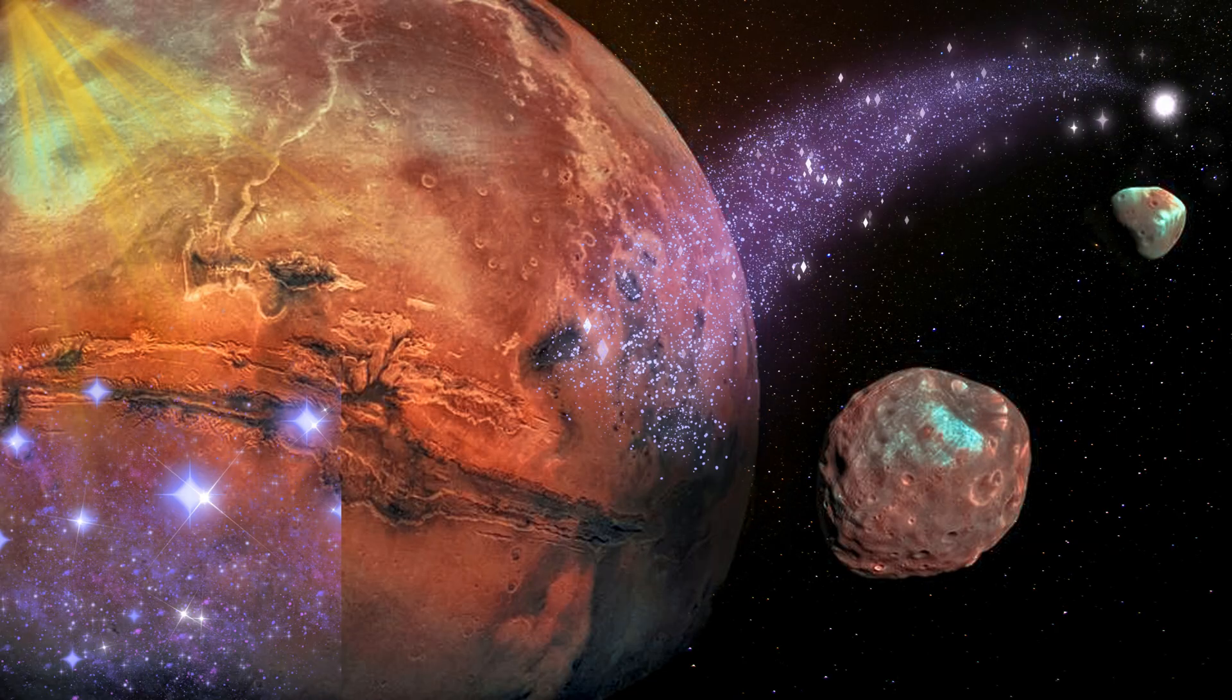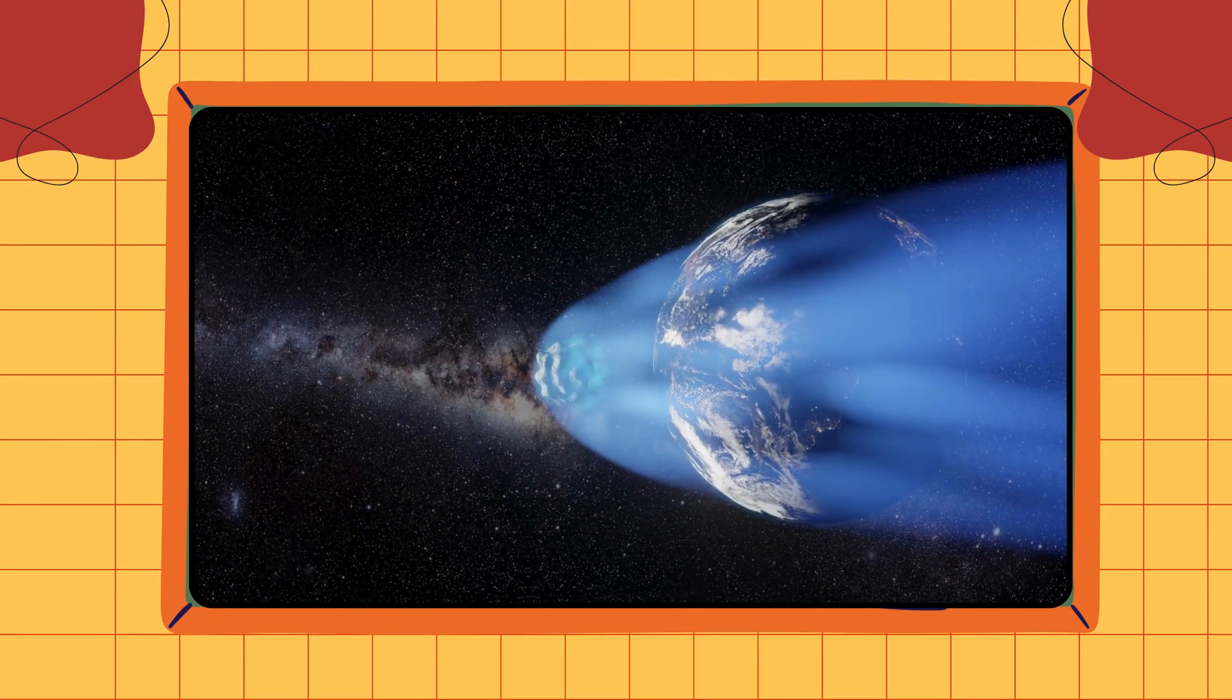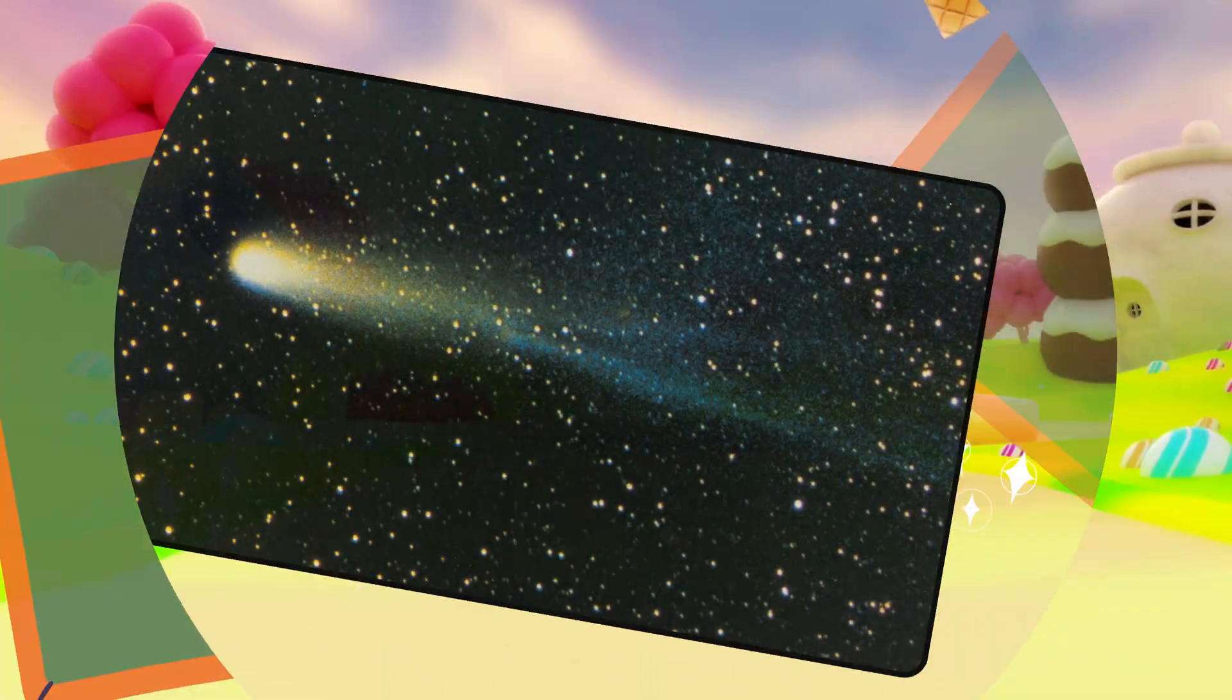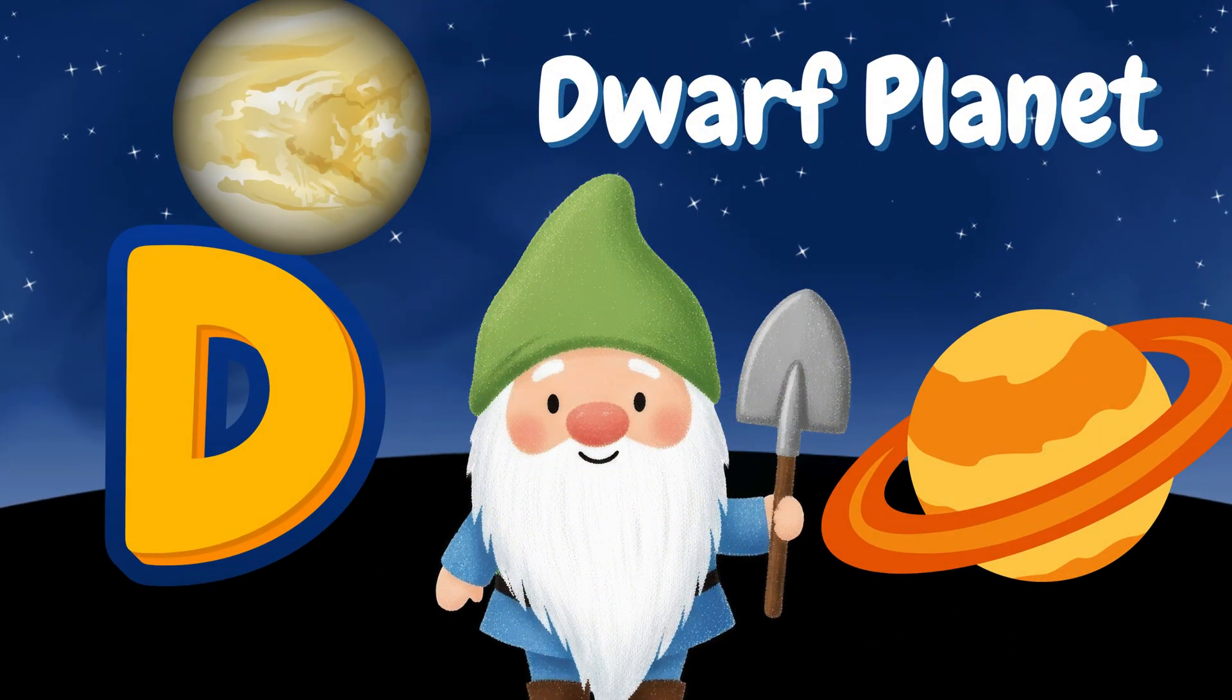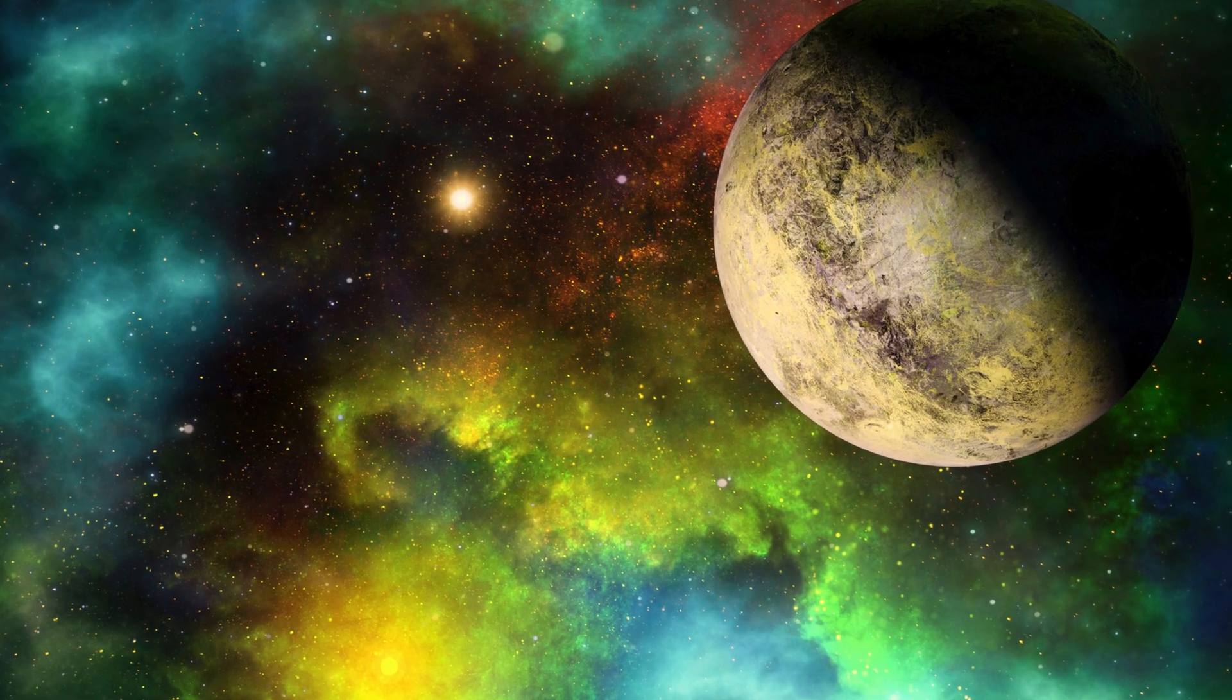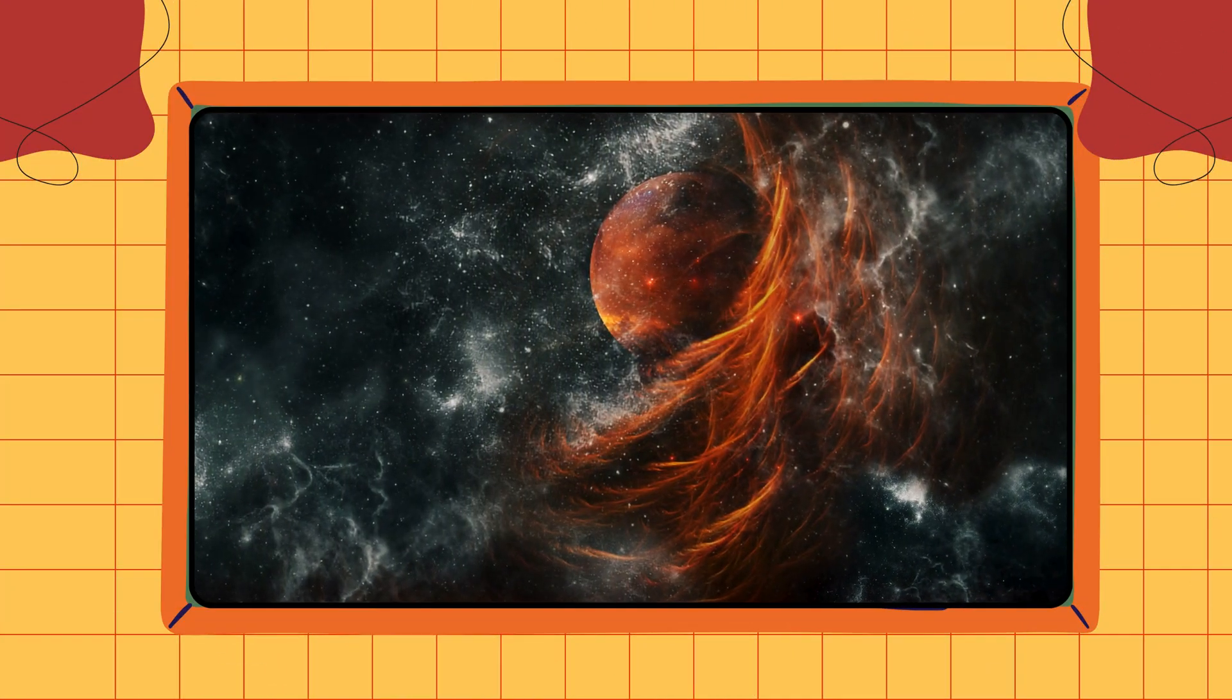C is for comet. Comets sparkle through space with glowing icy tails. D is for dwarf planet. Dwarf planets are tiny worlds that love to spin.